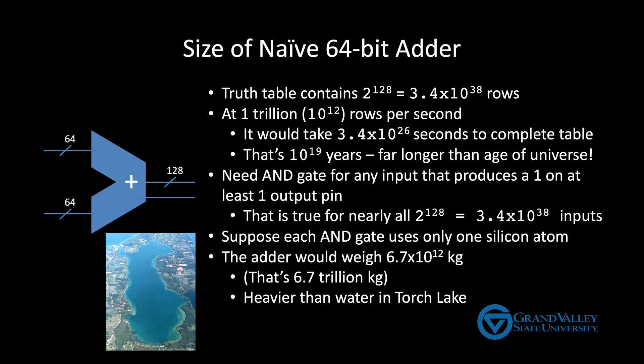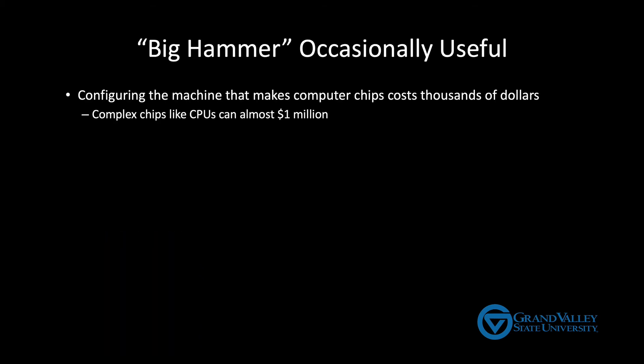It so happens that it costs thousands of dollars to configure the machine that you use to make computer chips. Well, to be more precise, it costs thousands of dollars to set up small computer chips. If you're trying to set up a factory to make like a CPU, that could cost upwards of a million dollars. But once the machine is set up, the actual incremental cost of making a chip is small.